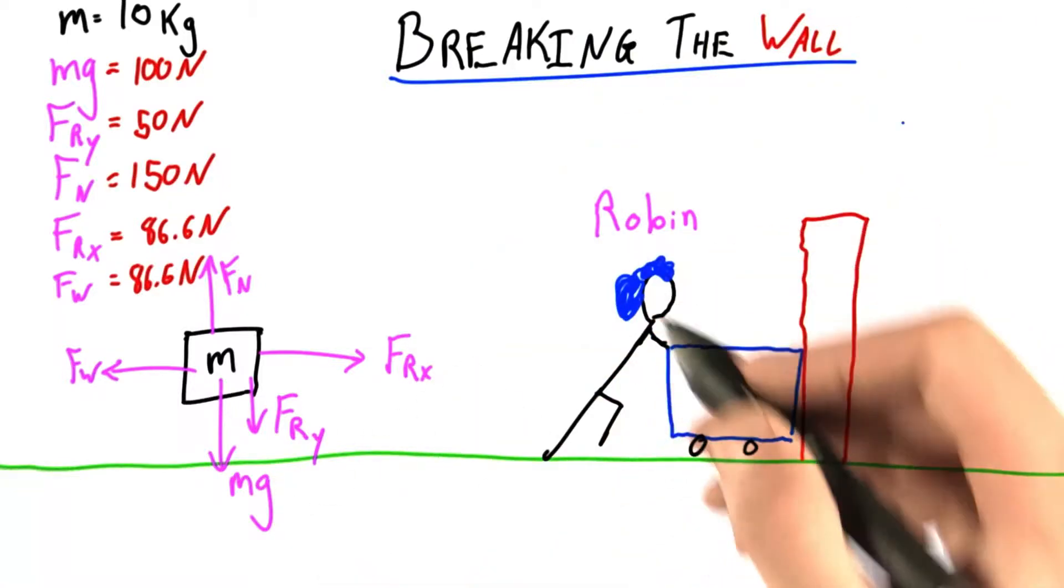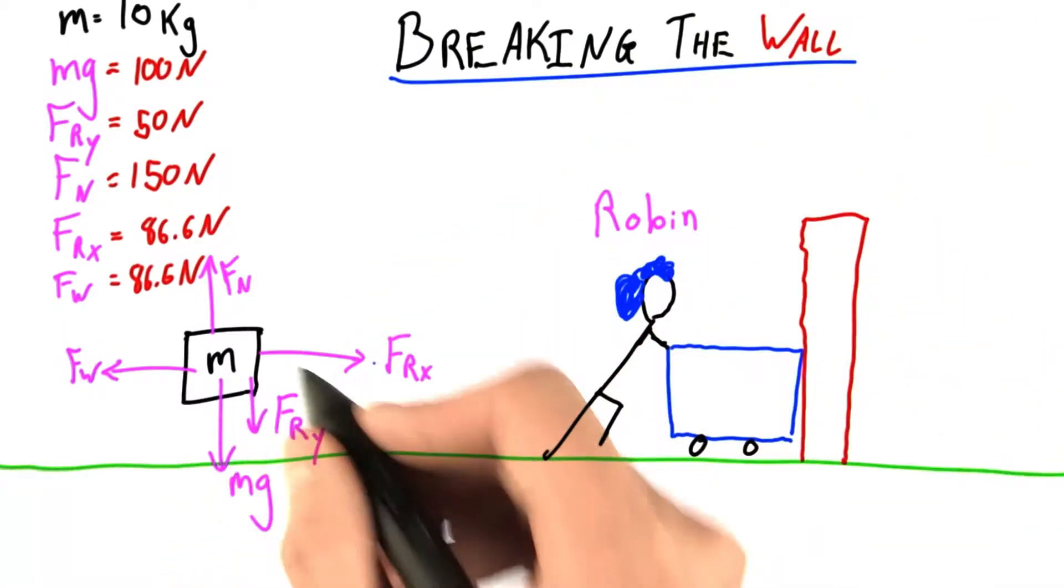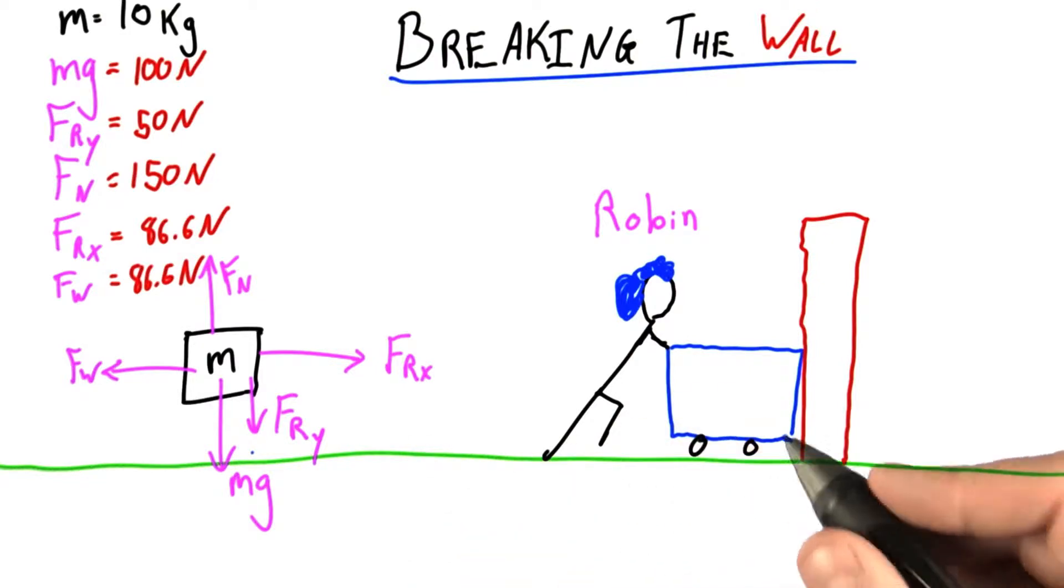So in the last problem, we broke down Robin's pushing force. We broke it into an x and a y component. We had to do some trig, but that was okay.